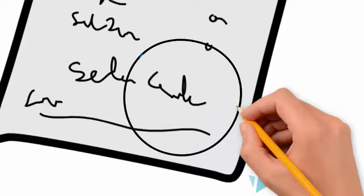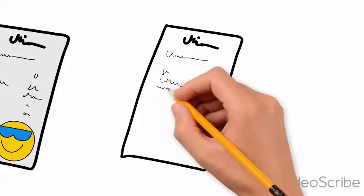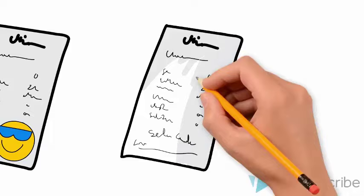For example, on a specific exam, if you want to get a full mark, it is necessary for you to answer all the questions correctly. However, answering all the questions correctly is sufficient for you to get a full mark on that exam.